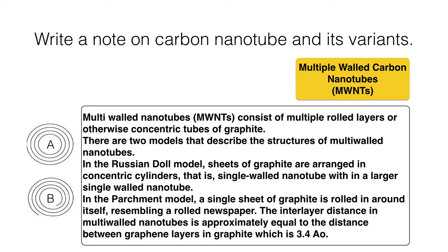In the parchment model, a single sheet of graphite is rolled around itself, resembling a rolled newspaper. The interlayer distance in multi-wall nanotubes is approximately equal to the distance between graphene layers in graphite, which is 3.4 angstroms.